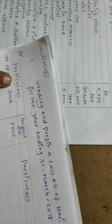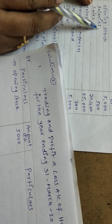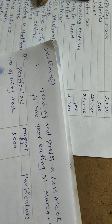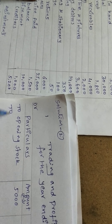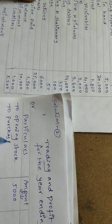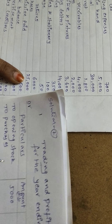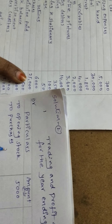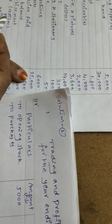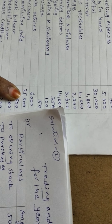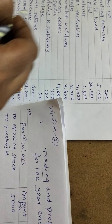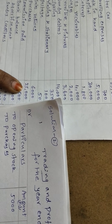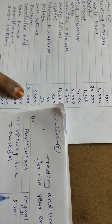Salaries will be shown in the P&L account — it is an indirect expense. Next item is purchases. Before recording purchases, check if purchase returns are given — if so, record in the inner column and deduct to get net purchases. In this problem purchase returns are not given, so purchases are 25,000.